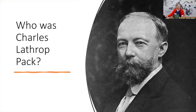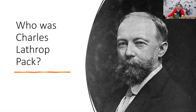Who was Charles Lathrop Pack? He was a businessman whose family had made their fortune in forestry, banking, and real estate. He lived in Cleveland, Ohio, which was where the National War Garden Commission operated. He was one of the five wealthiest men in America prior to World War I. In March 1917, he organized the U.S. National War Garden Commission.